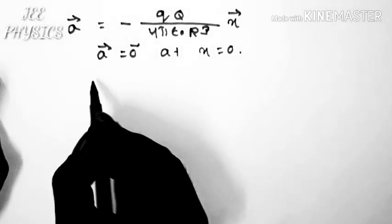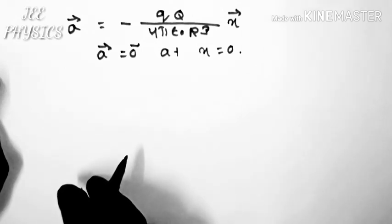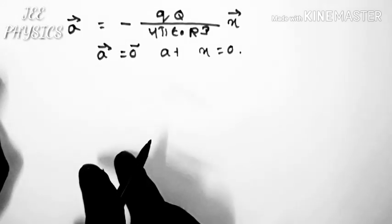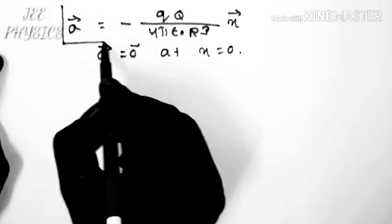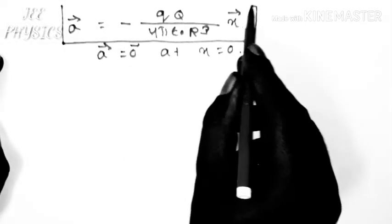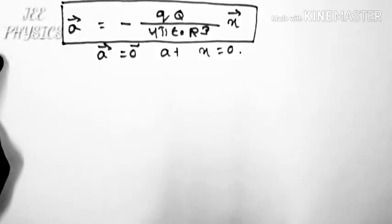Therefore we see that if a charge particle is kept at the center then total force on the charge particle is 0. Now if it is slightly displaced from the center then it will experience a force and the acceleration due to this force is proportional to that force and towards the center.